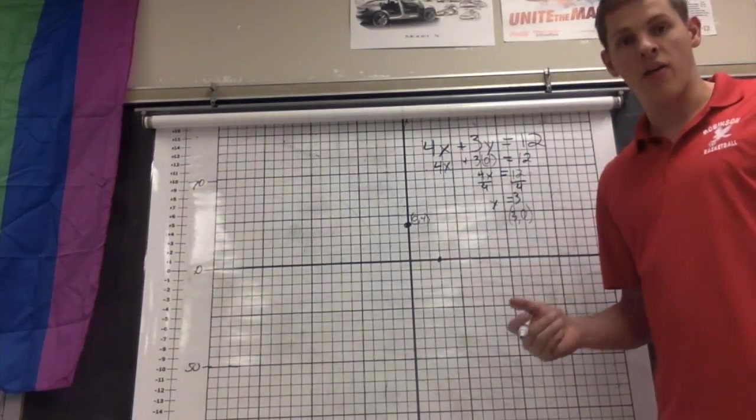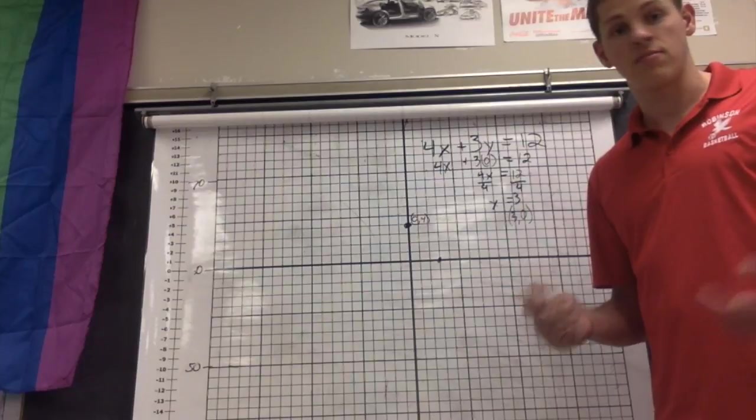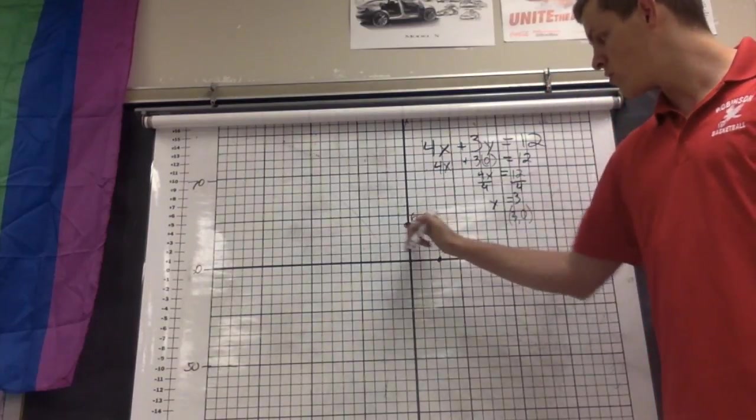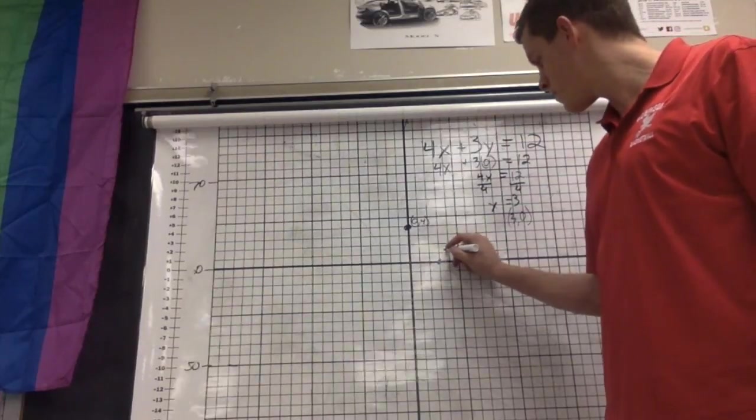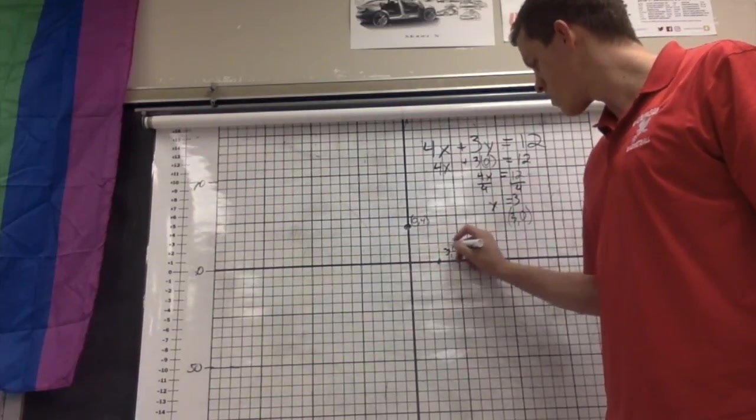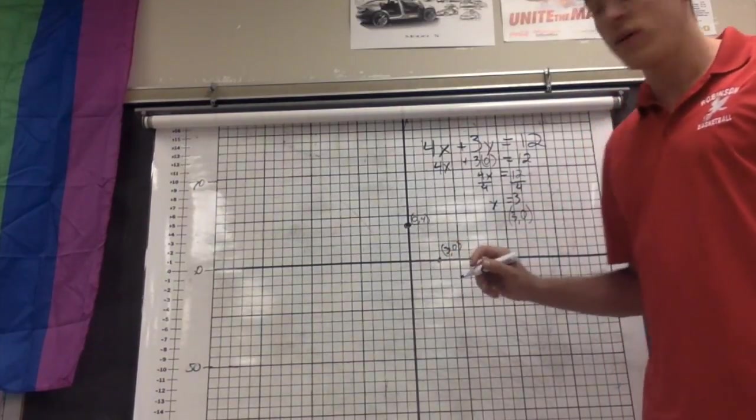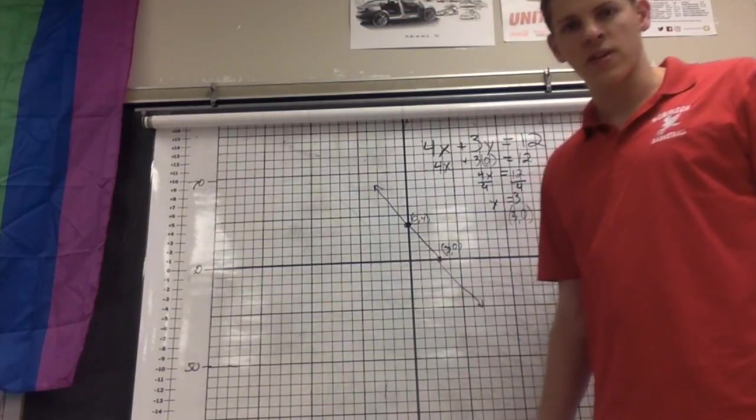Now, the question is how many points do we need to create any line? There's two. We have two points right here, 3, 0 and 0, 4. Now I'm gonna connect my points. So I know it's not a perfect line but that should be our line.